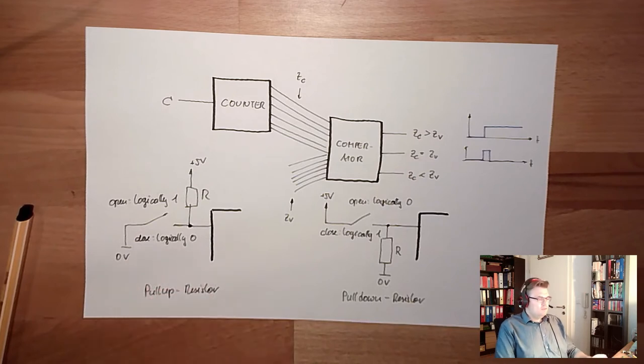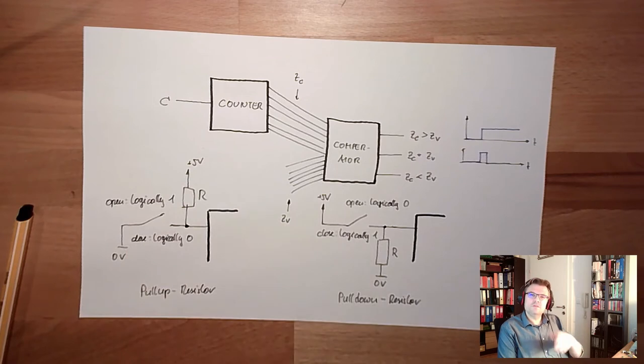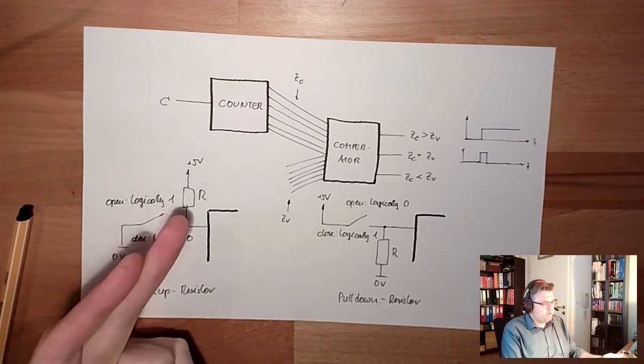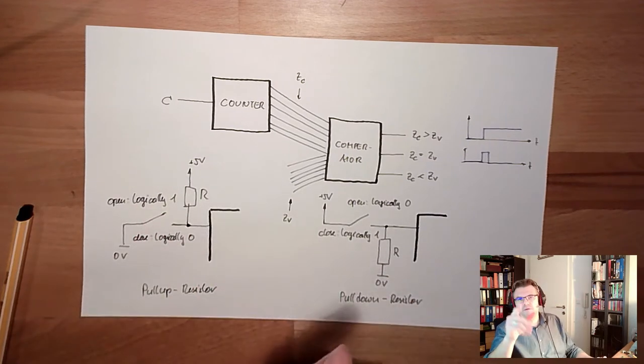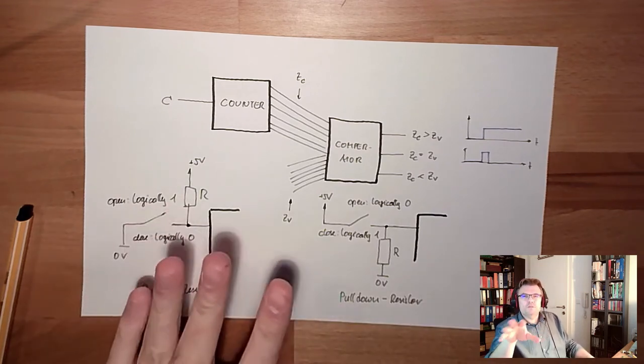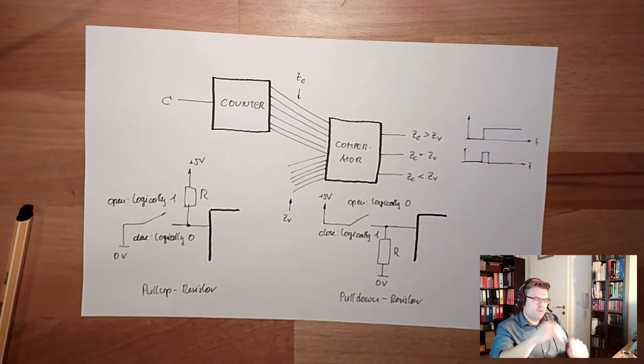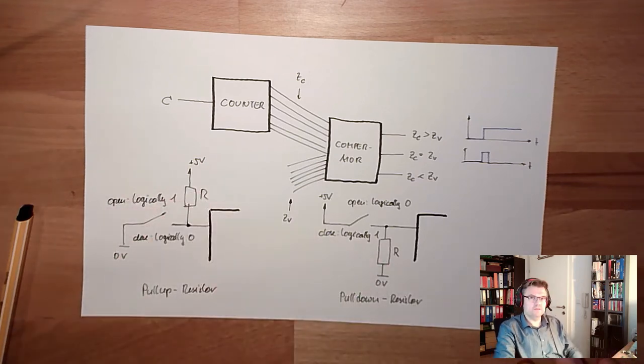So the possibilities, how I manage to do these contacts here, I can select. Why I'm telling you this, with this pull up and pull down resistor, by the way there is a different video in the Arduino group. You can watch it if you want, where we really plug this together. I will link it.